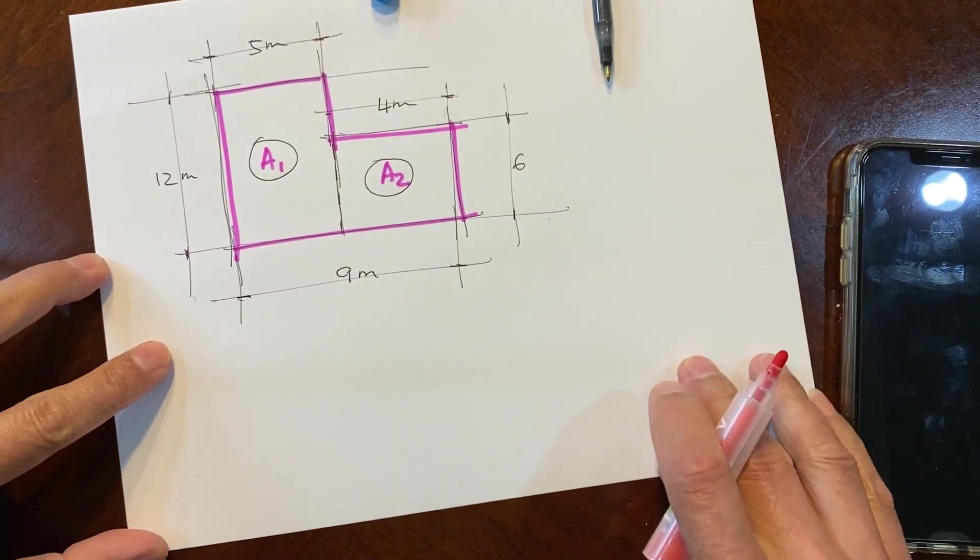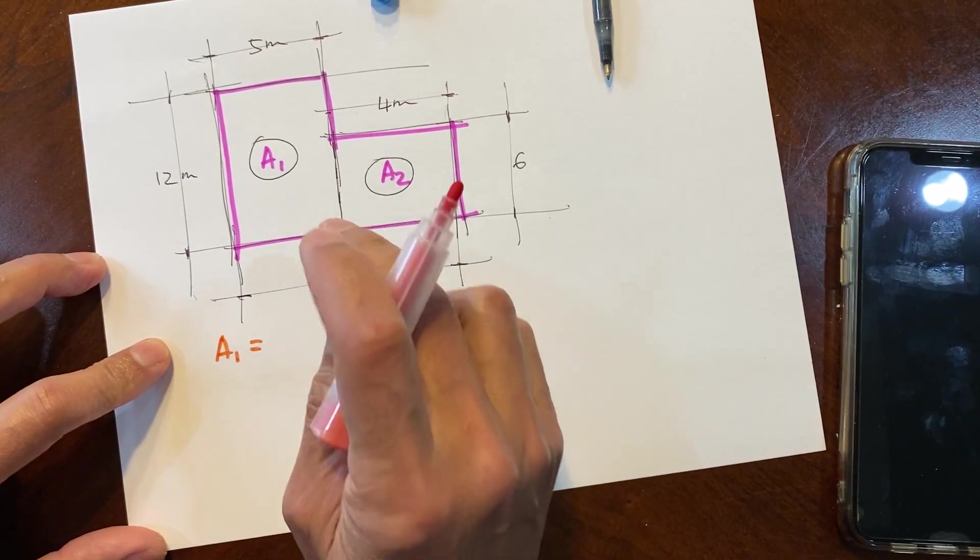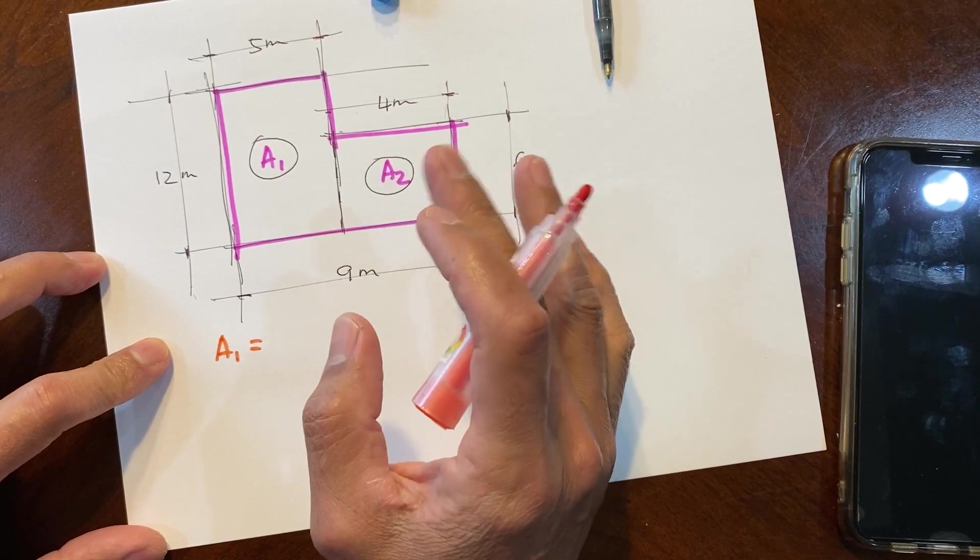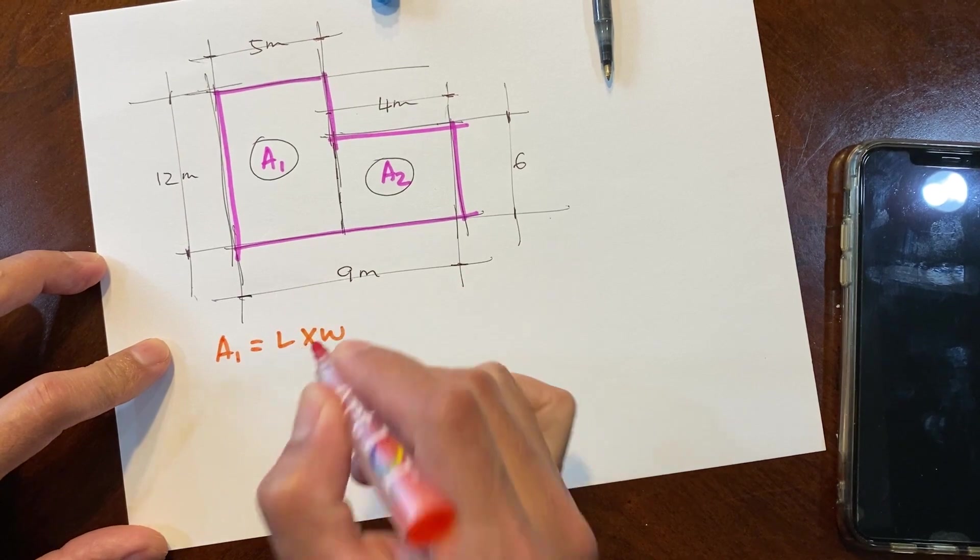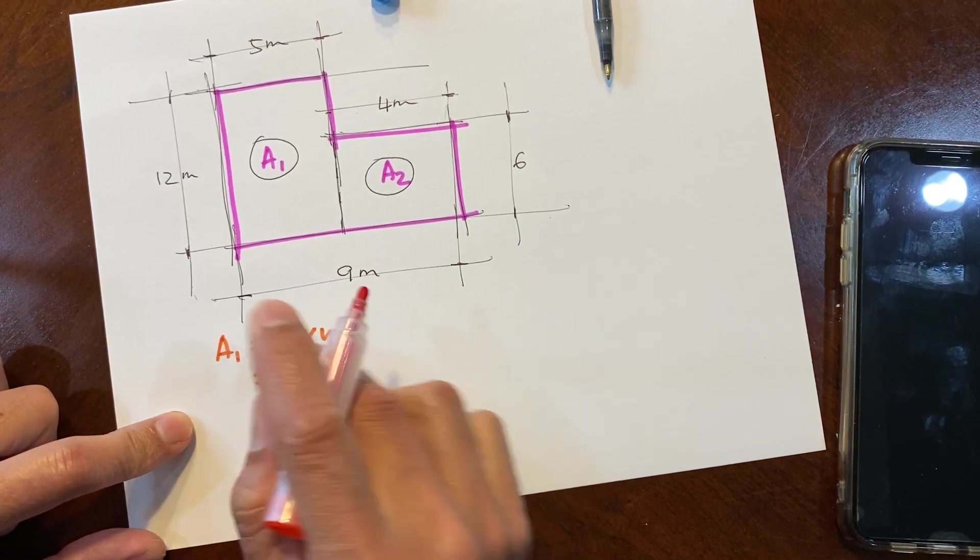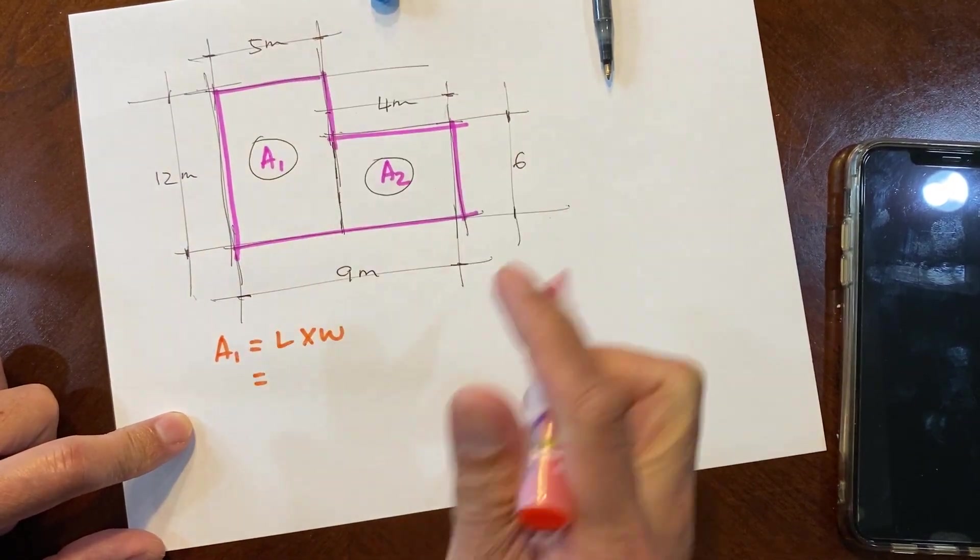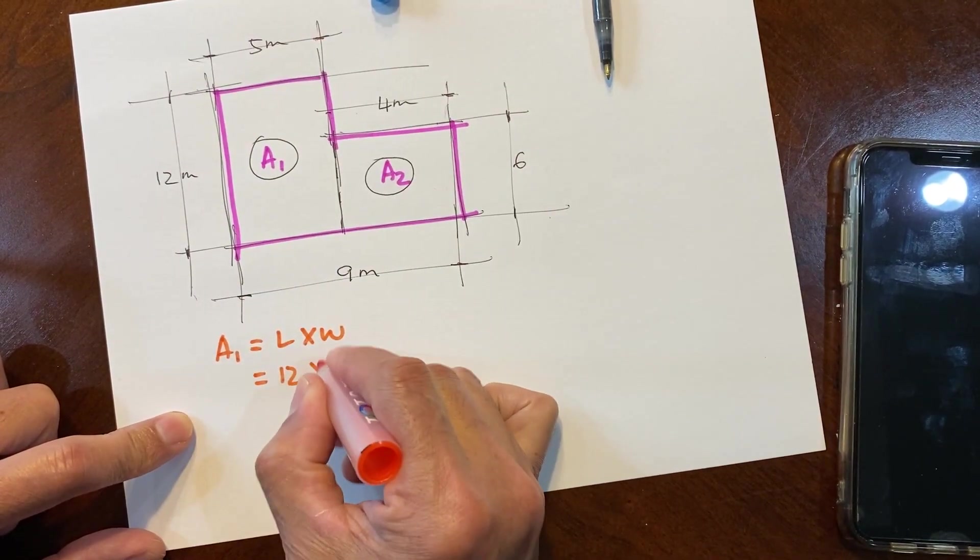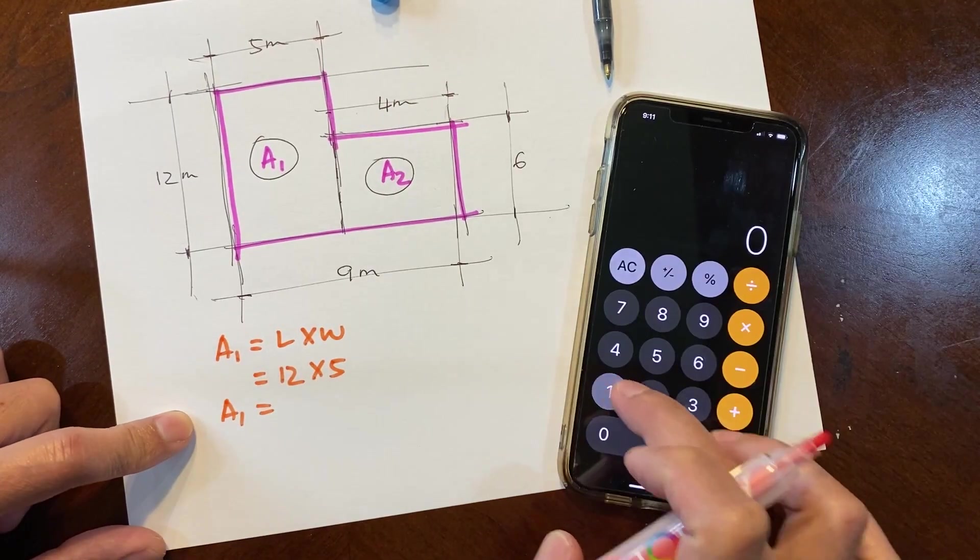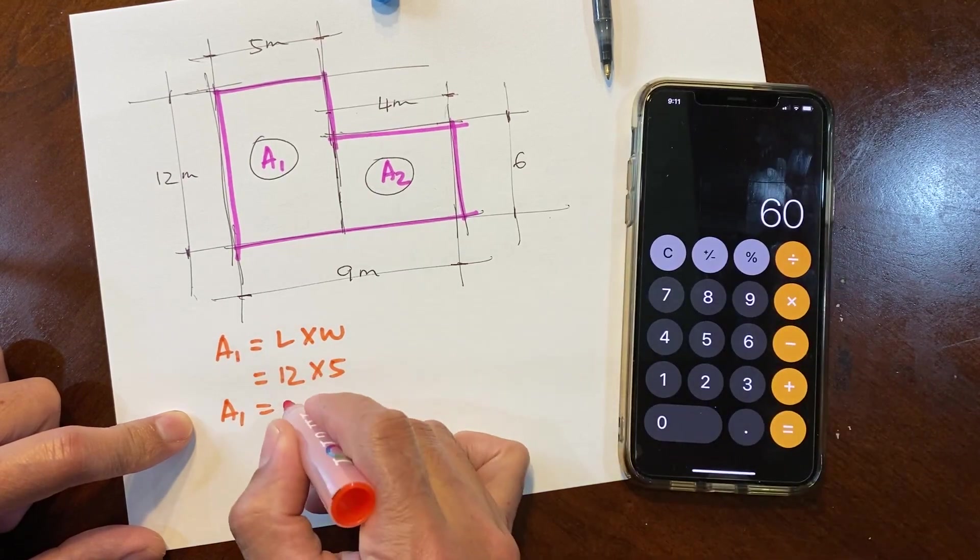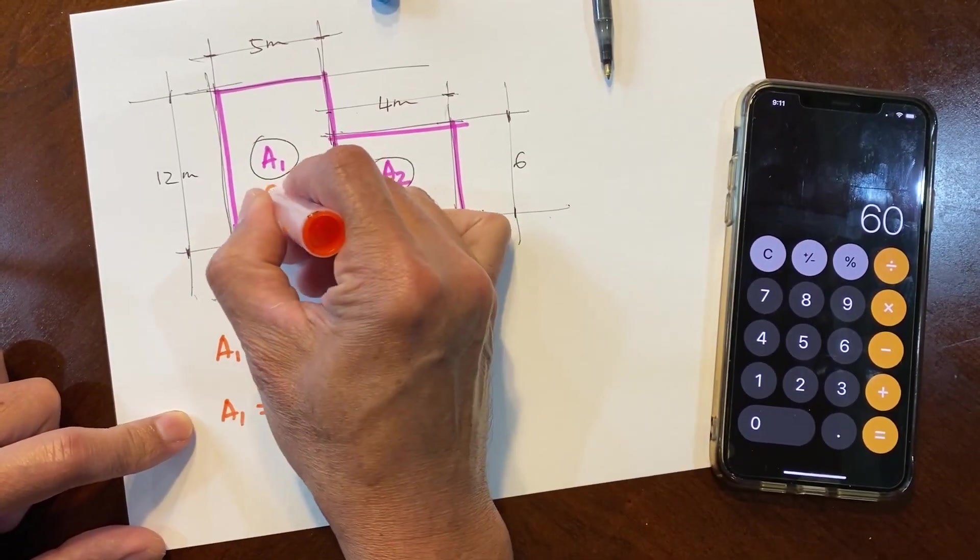Rectangle area is length times width, right? So by substituting, we have length of 12 meters and width of 5 meters. 12 times 5 will be 60. So Area 1 is 60 square meter.